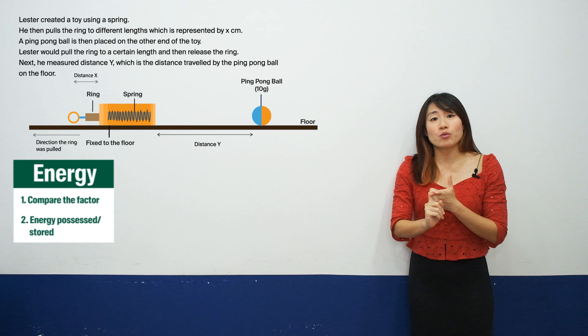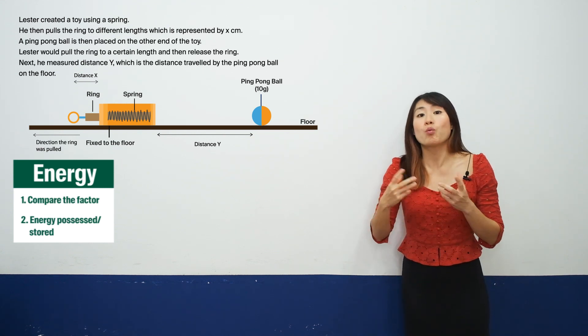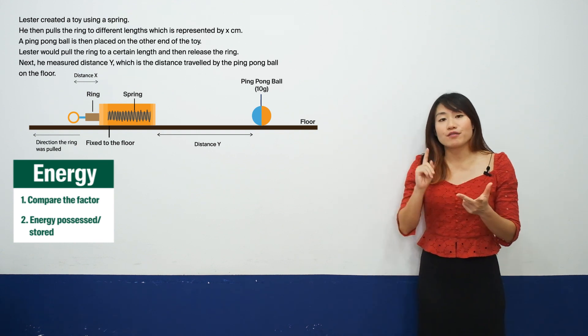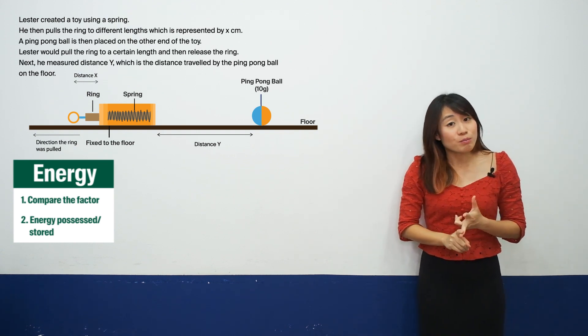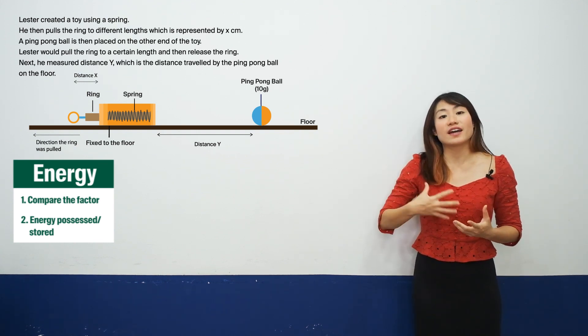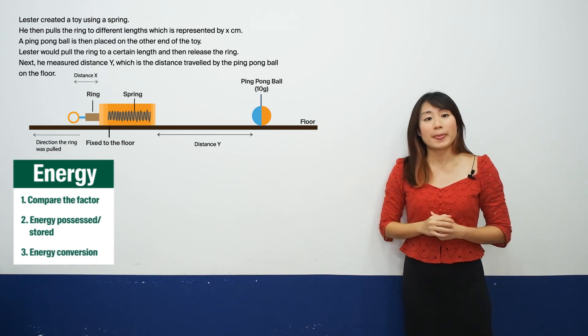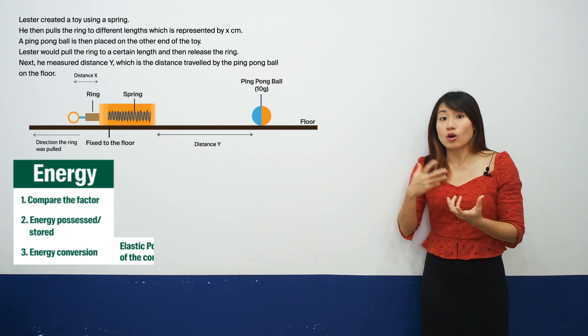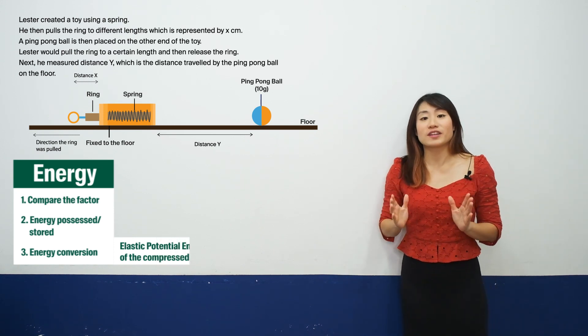Secondly, you need to state what the object possesses, what energy this object possesses in this case. And finally, which is the most important part, you need to identify the energy conversion. So when the spring compresses, the spring would possess or store elastic potential energy.